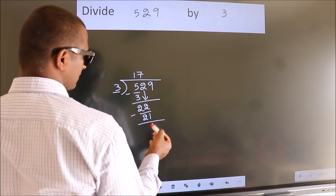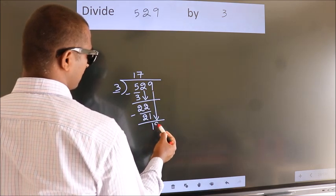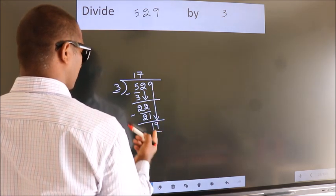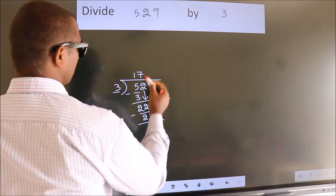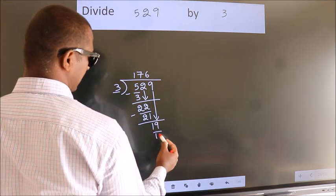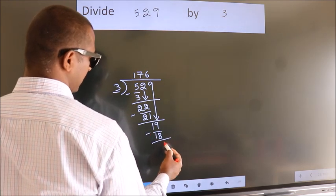After this, bring down the beside number, so 9 down, so 19. A number close to 19 in 3 table is 3 6 18. Now, we subtract, we get 1.